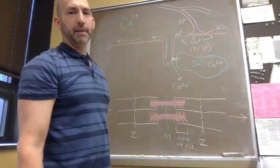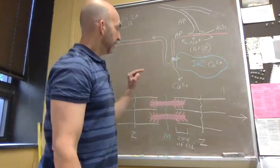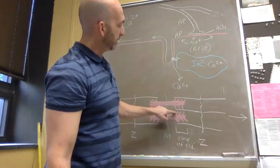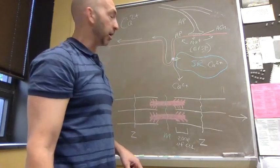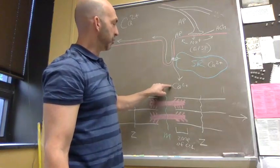The zone of overlap is where the thick and thin filaments overlap. We point that out because that's the region in which we generate tension. That's where the cross-bridges—the connection between the myosin heads and the thin filament—can occur. Again, they don't occur until calcium is released.